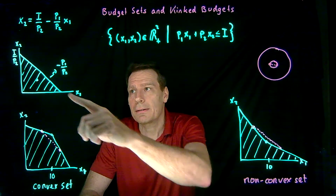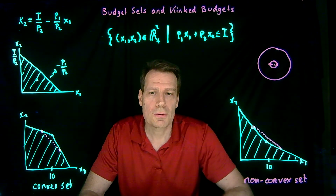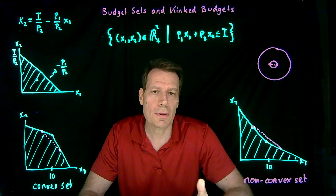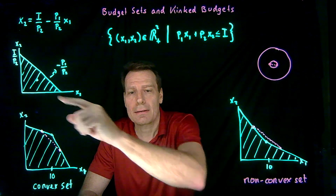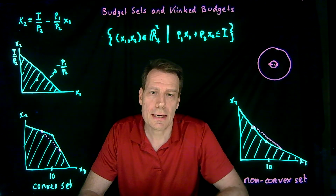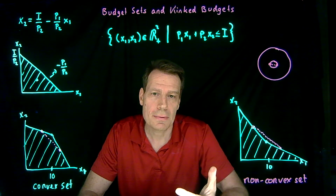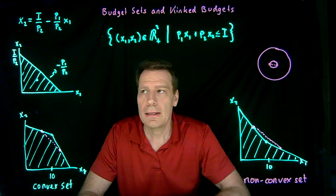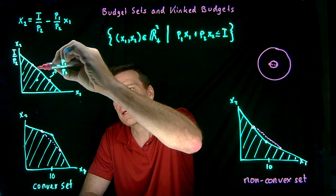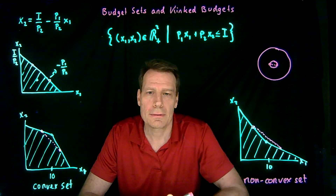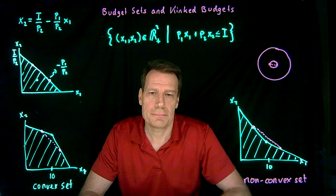Typically we will have budget lines that are just straight lines, because consumers face the same prices regardless of how much they consume. In that case, we have a budget set that is in fact a convex set — any two points you pick have a connecting line that lies fully within the set. Even if you pick two points that lie on the budget line, the line connecting them also lies on the budget line, so it still lies fully within the budget set. That's the end of the budget.